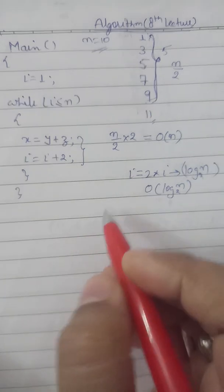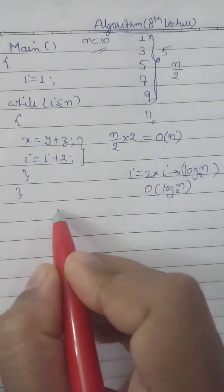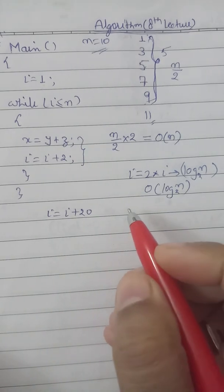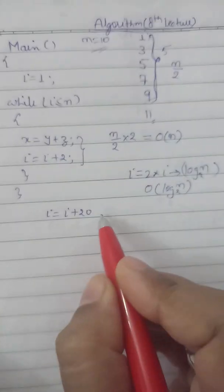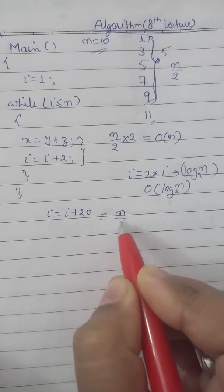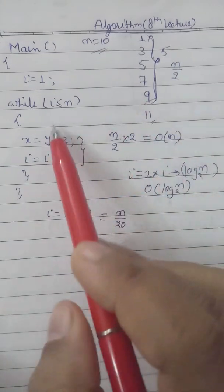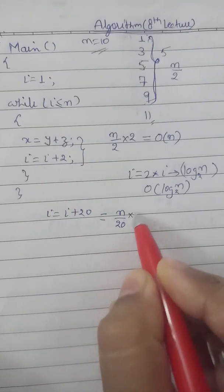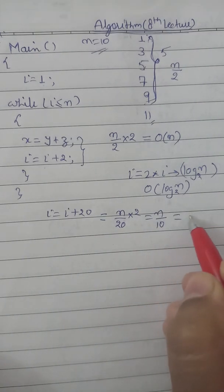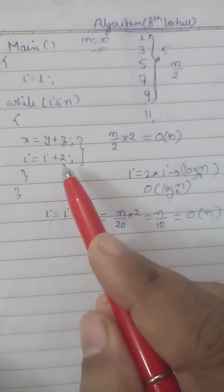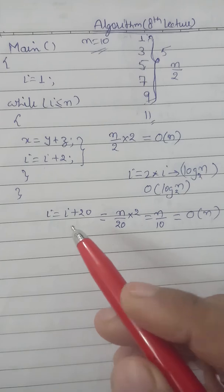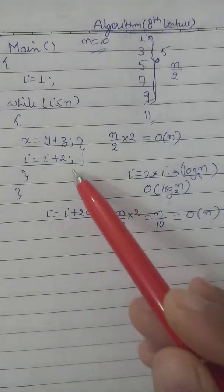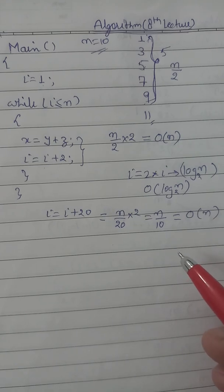If instead of i equals i plus 2 we have i equals i plus 20, the time complexity will be n/20. We have two statements, so n/20 into 2 gives n/10, and we can simply say order of n. So when i equals i plus 2 it is n/2, and when i equals i plus 20 it is n/20 — both reduce to O(n).